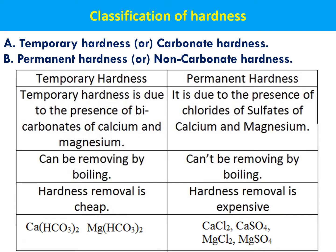There are two types of hardness: temporary hardness and permanent hardness. Temporary hardness is also called carbonate hardness; permanent hardness is also called non-carbonate hardness. Temporary hardness means the hardness can be easily removed by a physical process like heating or boiling. It is mainly caused by carbonates and bicarbonates of calcium and magnesium — i.e., calcium bicarbonate and magnesium bicarbonate. Because it is caused by bicarbonates, it is called carbonate hardness.